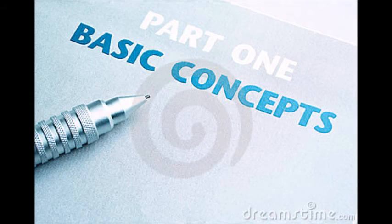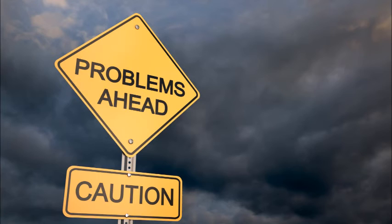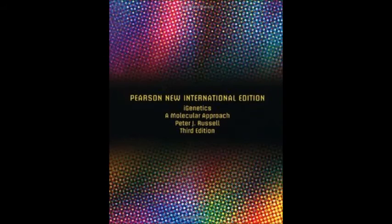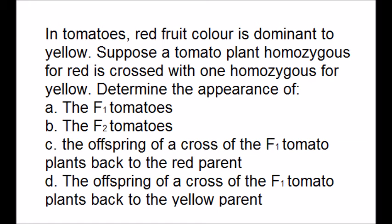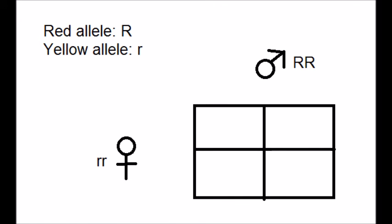Now that we have covered the basic concepts, let's try to use them to solve some problems taken from the textbook iGenetics by Peter J. Russell. In part A we have to work out the appearance of offspring when a tomato homozygous for the dominant red allele is crossed with one that is homozygous for the recessive yellow allele. Using a Punnett square with red as big R and yellow as little r, all gametes from the male carry big R and all from the female carry little r. All offspring will therefore be heterozygous, and since red is dominant to yellow, all tomatoes will appear red.